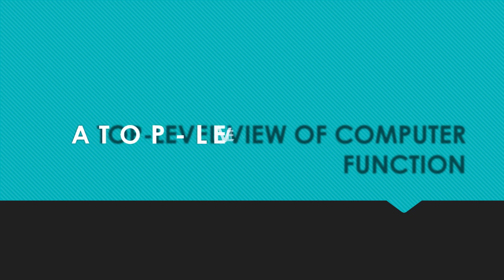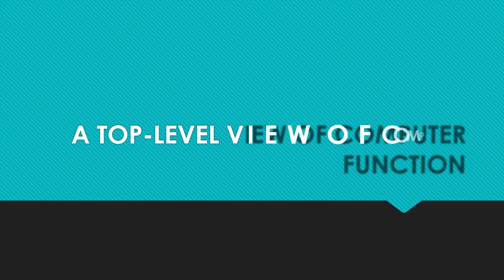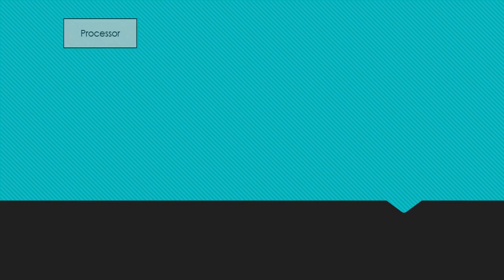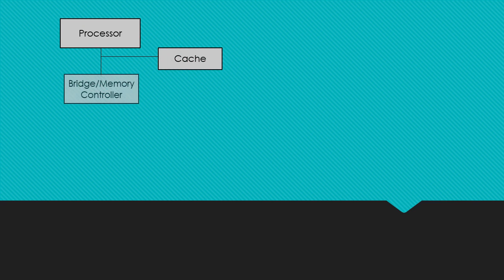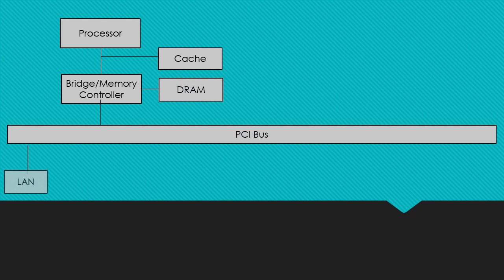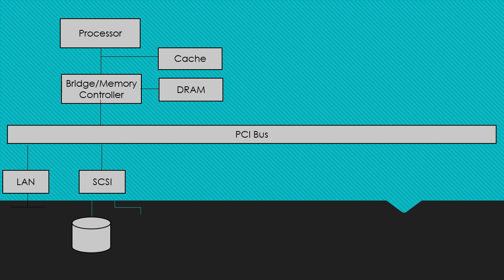A top level view of a computer function. From the processor down to the cache and bridges, memory controller to dynamic random access memory, to the PCI bus, down to LAN and SCSI and expansion bus bridge, down to expansion bus into bus input output devices.